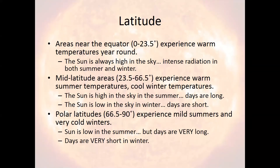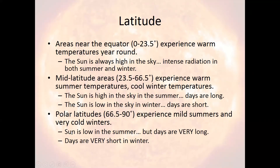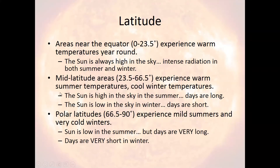What I mean by extreme seasonal variations is you can get substantial amounts of sunlight in the summertime. In fact, anywhere above the Arctic Circle has at least one day where the sun is out for 24 hours. So days are very long in the summertime but very short, if at all, in the wintertime. Summertime can become extremely warm and wintertime can become extremely cold. So you get very little variation near the equator, some variation in the mid-latitudes, and major variation near the poles.